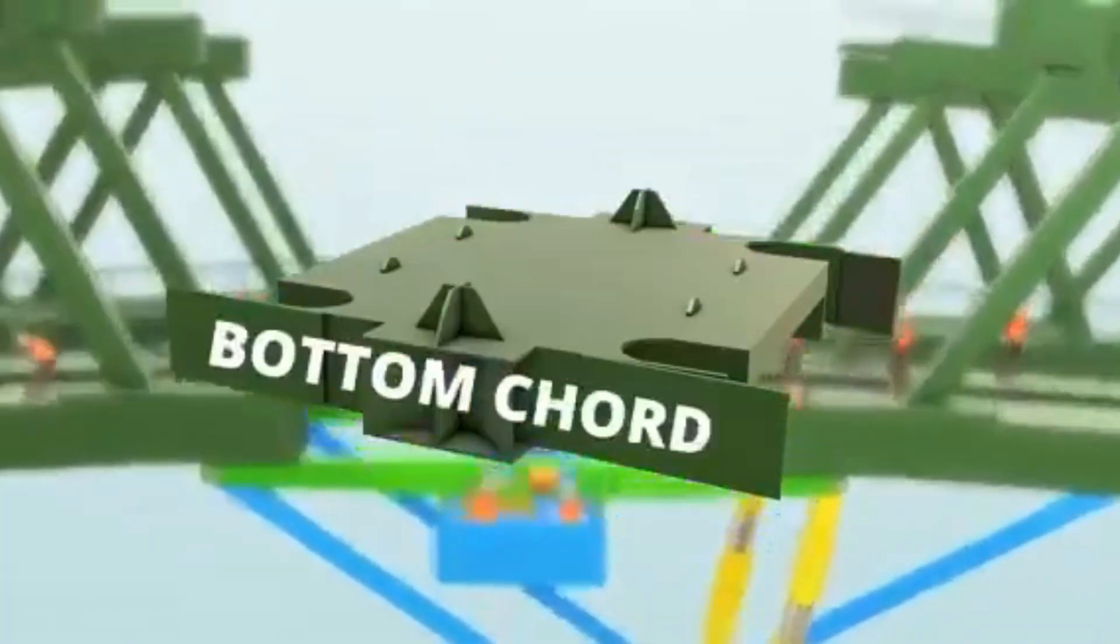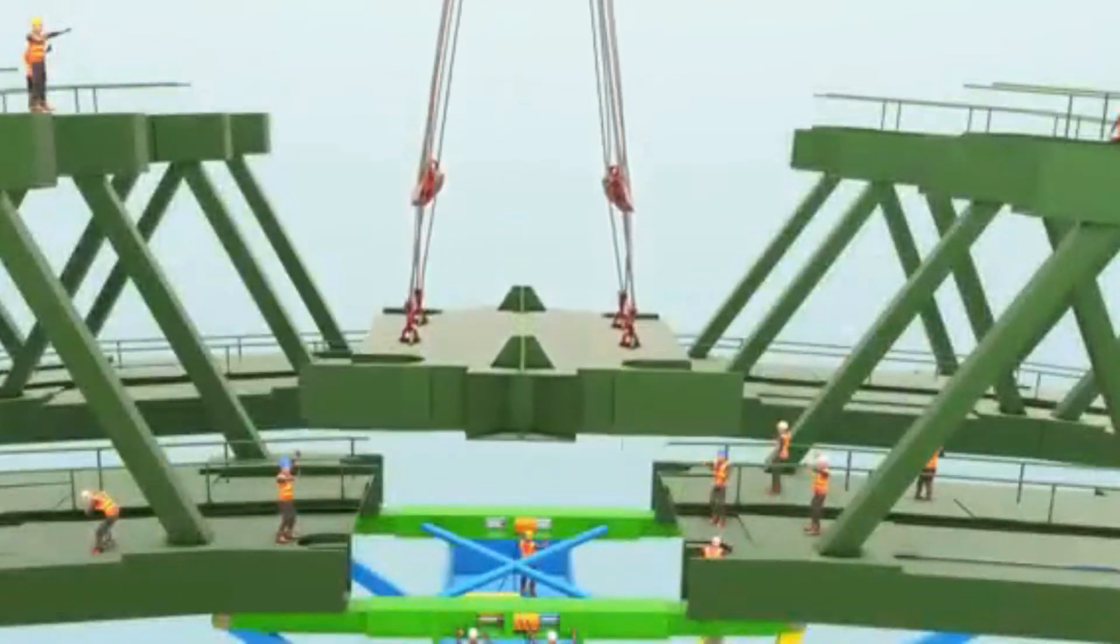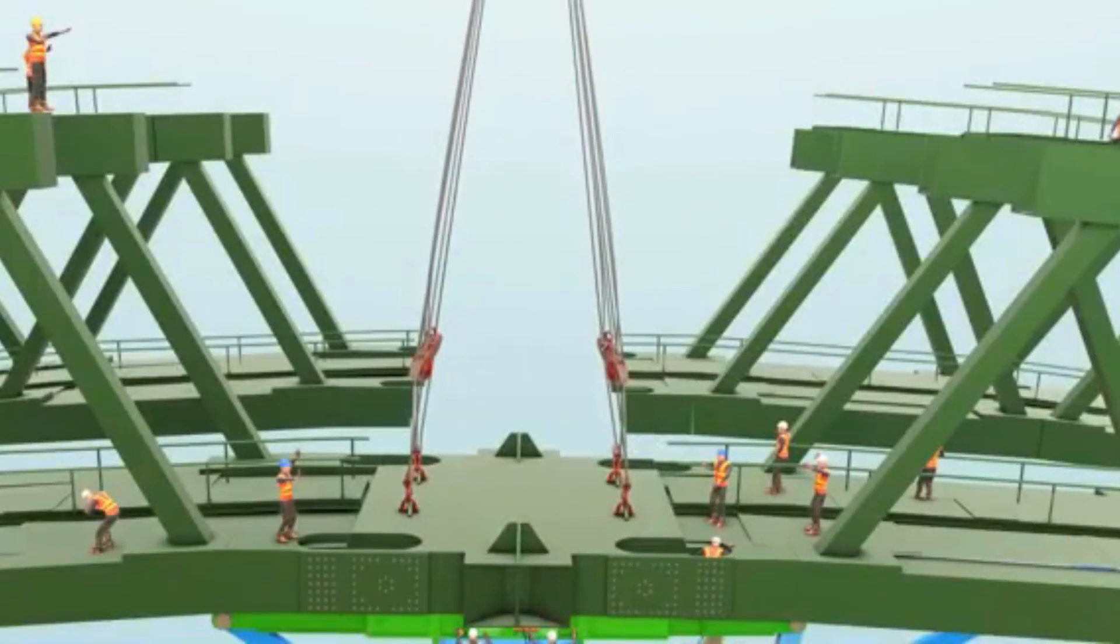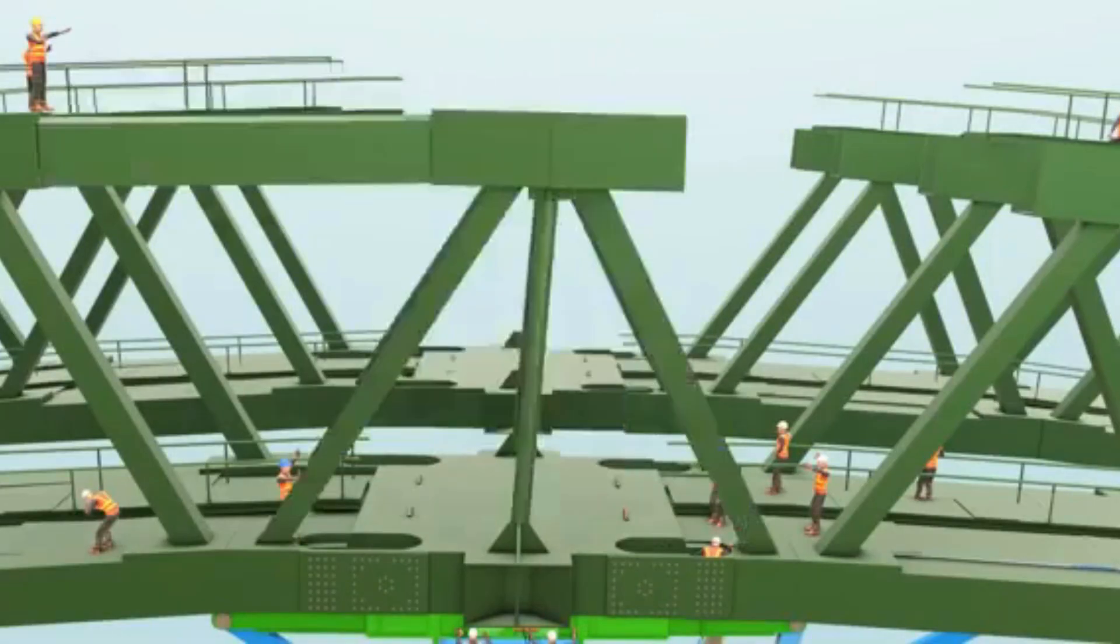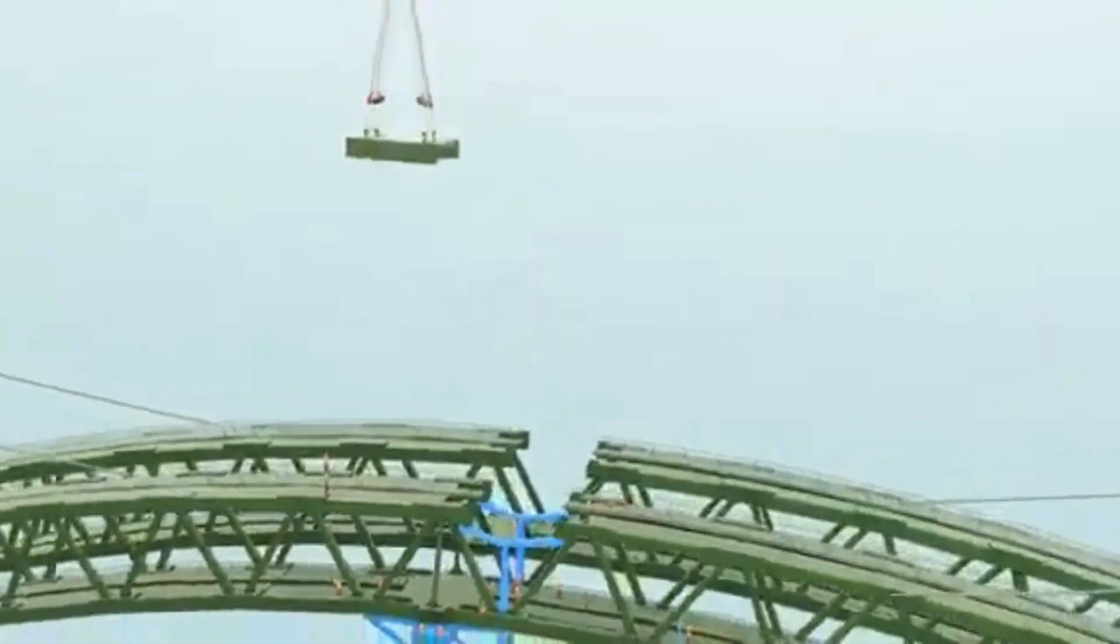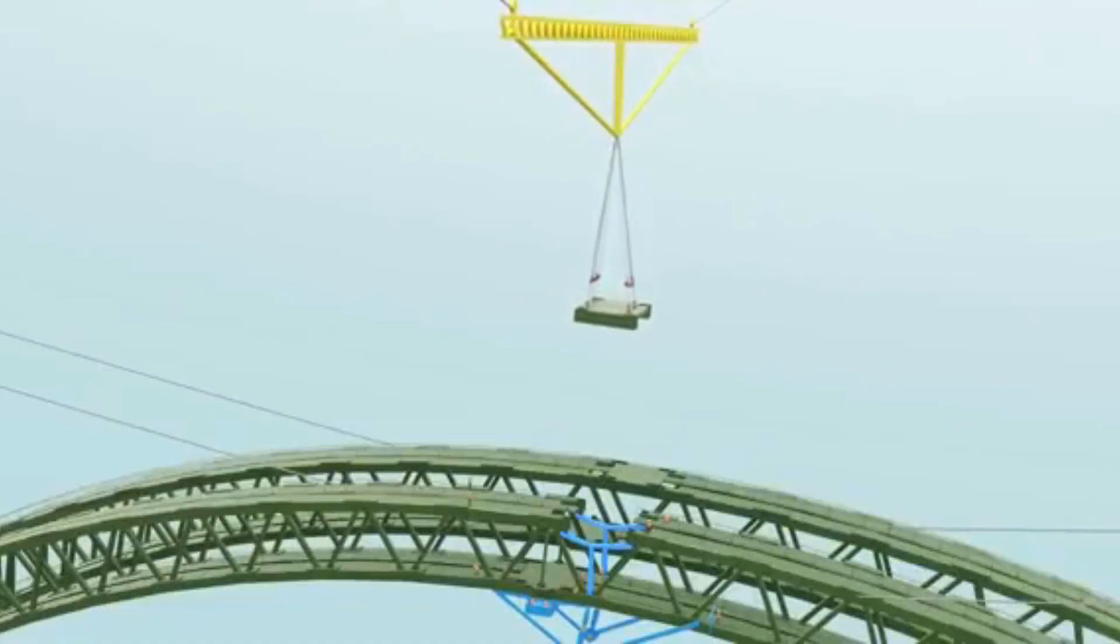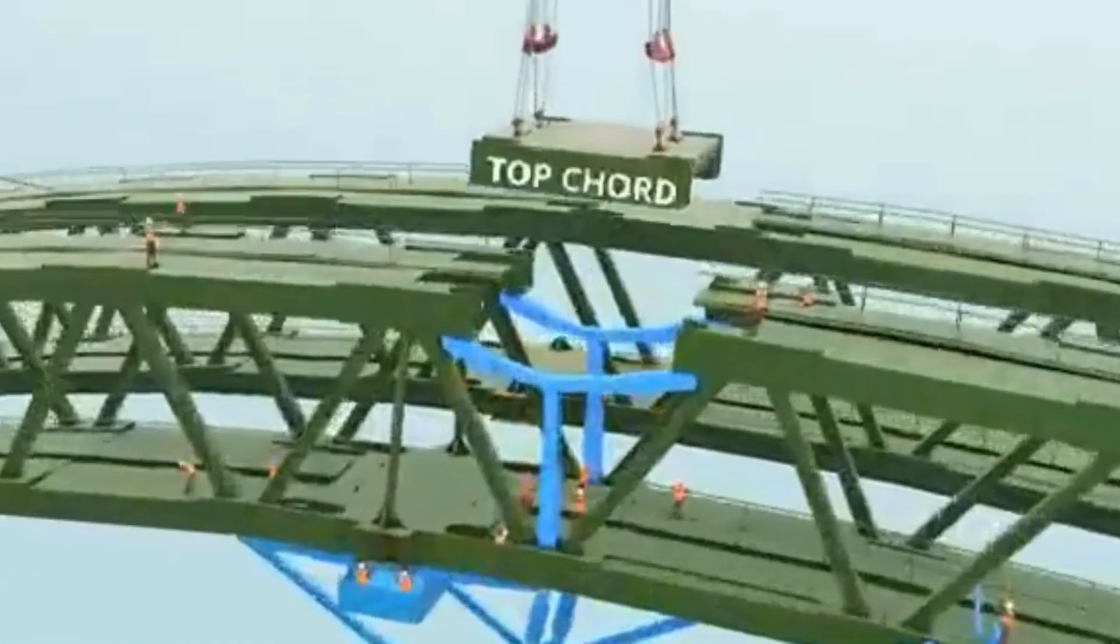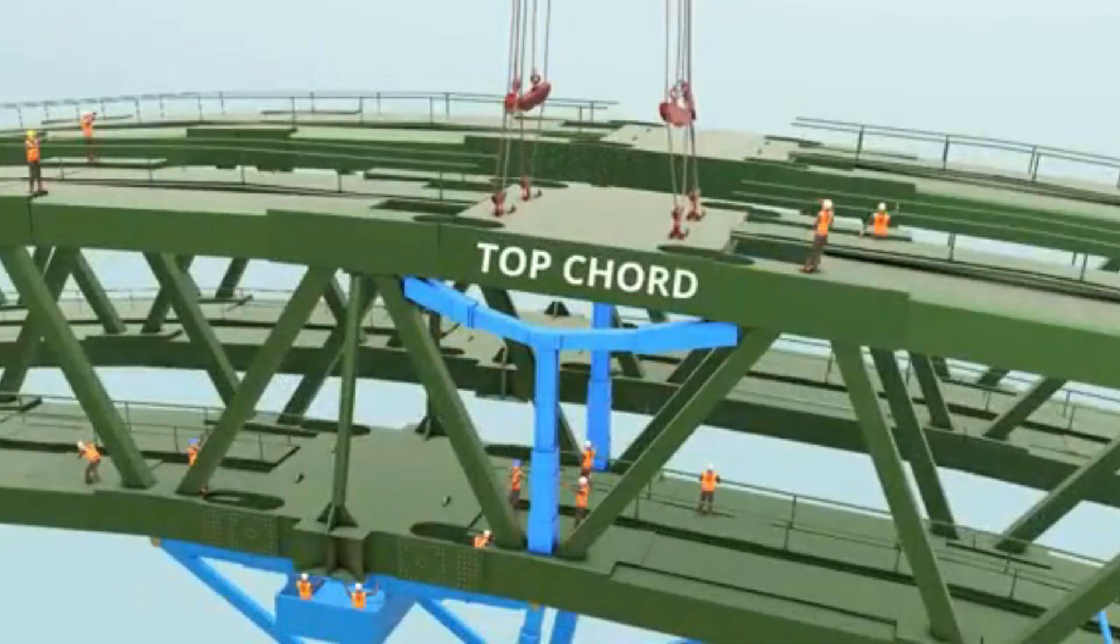The bottom cord can be fitted. Once this is done, the force in the green member of jack can be released now, and a few more elements can be installed. Now they introduce the next jack until the perfect gap is achieved in the top cord. Adjust this jack. Now, the top cord, the final structural element of the Chenab Bridge, is installed.